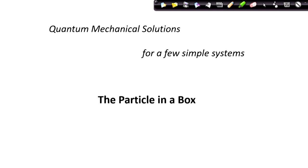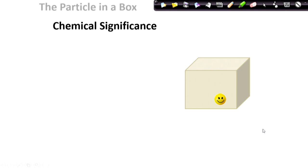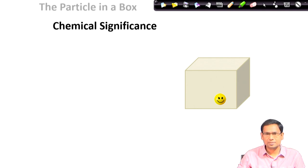To begin with, we would look for quantum mechanical solutions for a few simple systems. These systems are exactly solvable, and the first one we will be dealing with is the very famous so-called particle in a box problem. Before we discuss the quantum mechanical solution, let us discuss its chemical significance, because often students get confused with the terminology — what is this particle and what kind of box is it? Let us put the matter straight at the outset.